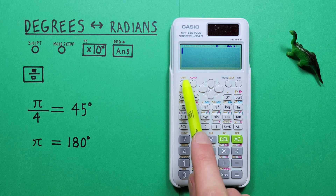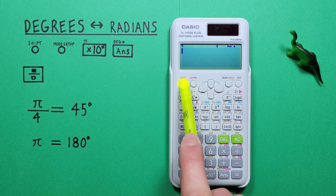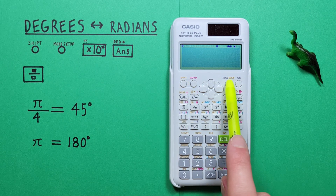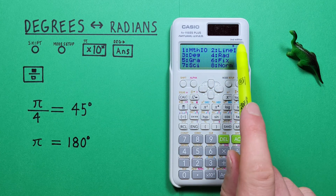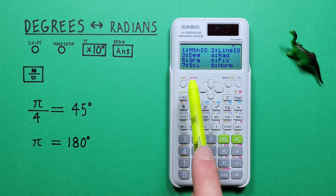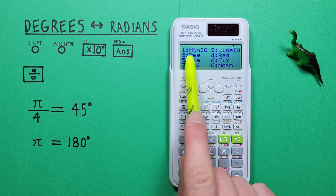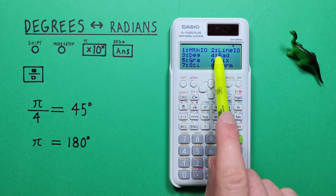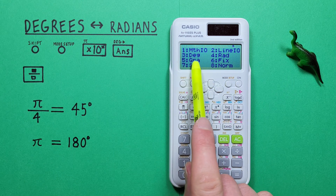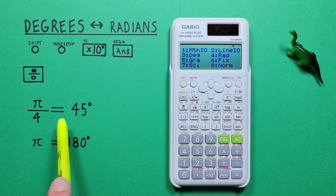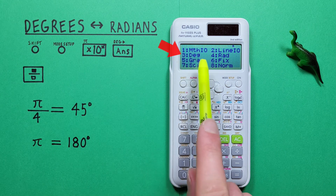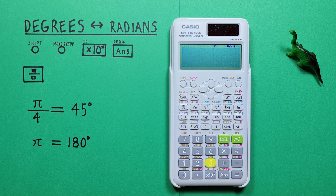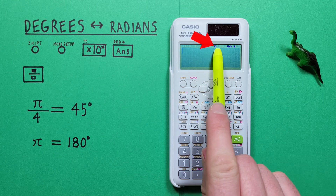To do this we press shift and then the mode key, which brings us to this menu. We have number three for degrees, four for radians, five for gradians. Since we want our result in degrees, we choose number three. And now we see at the top of our screen we have a D there.